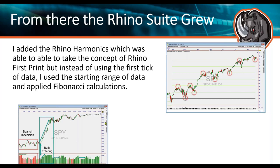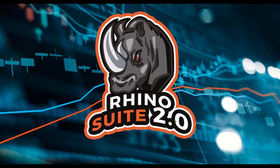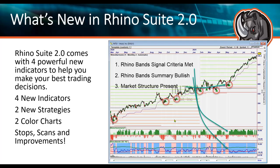Those were the original three indicators that came with the Rhino Suite. That takes us into Rhino Suite 2. Rhino Suite 2 was like starting with a tricycle and then moving up to a Harley Davidson. The concept is still there, but the powerhouse behind it is an incredibly noticeable difference.